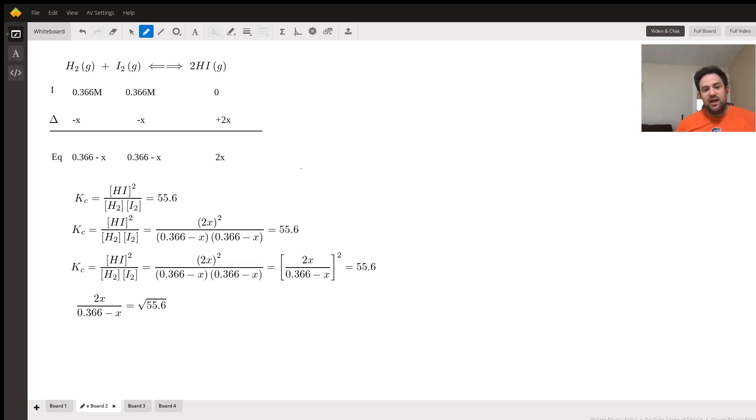As we flesh this out a bit, we can see that for the HI we can just replace that with 2x, and for the H₂ and the I₂ we can replace that with 0.366 minus x.